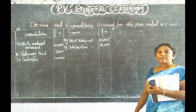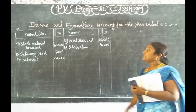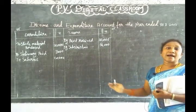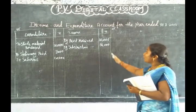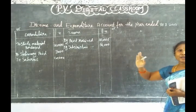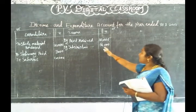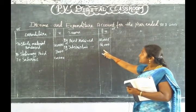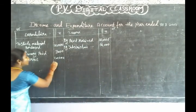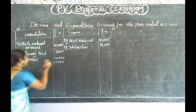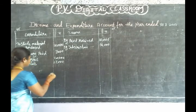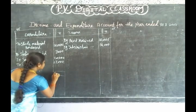We calculate the surplus value. If the debit side is lower, we have a surplus. If the credit side is less, we have a deficit. The credit side is 64,000 and the debit side is 37,000. The difference is 27,000. We write the surplus value. Overall total: 64,000.